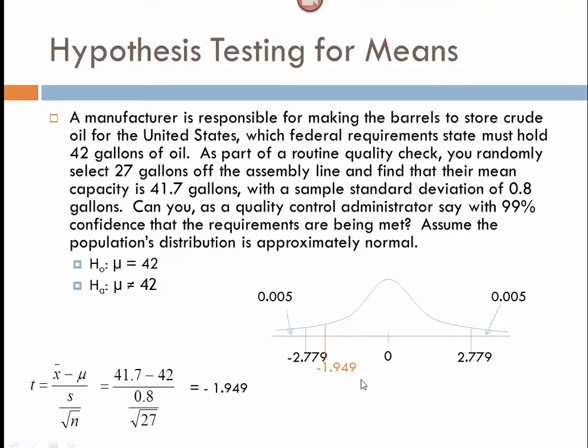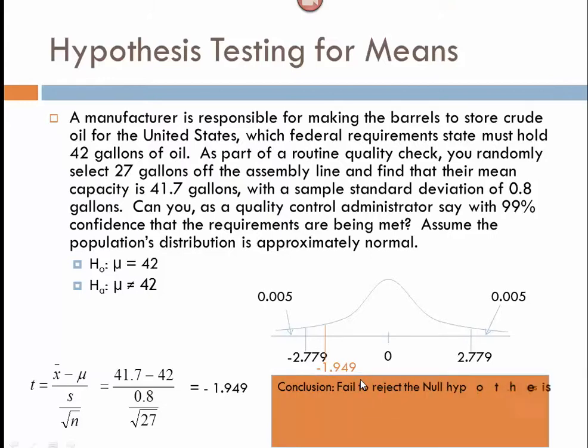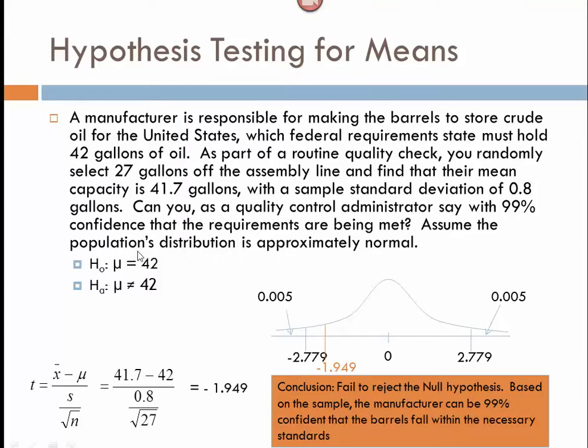And so, in this case, we do not have enough evidence. We fail to reject the null based on the sample. The manufacturer can be 99% confident that the barrels are falling within the necessary standards. All right, we're failing to reject the null. So, we're actually saying that, yep, it looks like these barrels are meeting the requirements because we're not going to reject this and assume that they are different than 42. Kind of our worst case scenario there.